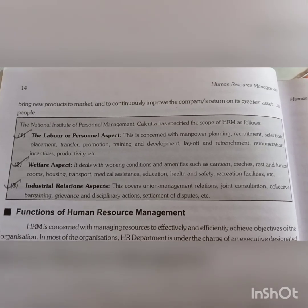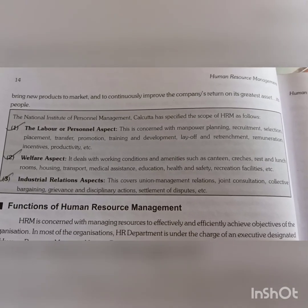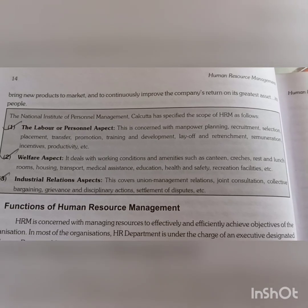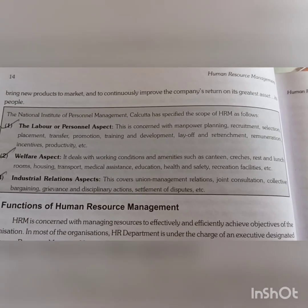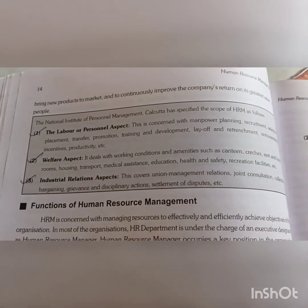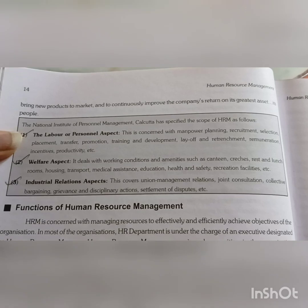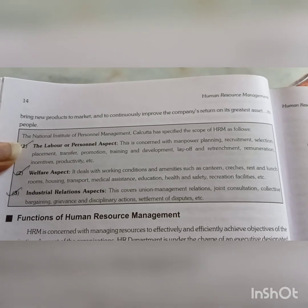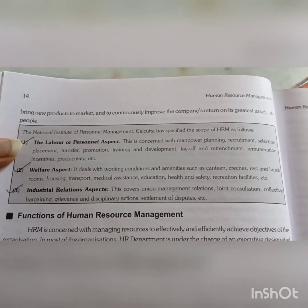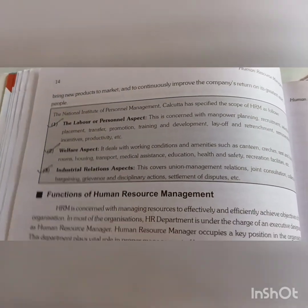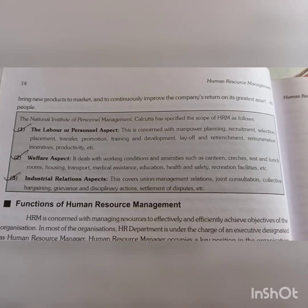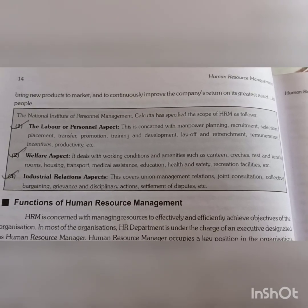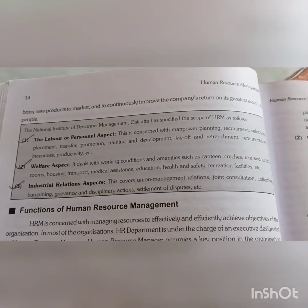There is also scope in personal management: Labor and personal aspects — manpower planning and recruitment. These include planning, recruitment, selection, placement, transfer, promotion, training, development, lay-off, retrenchment, management, incentive, and perquisite. Labor welfare deals with working conditions, maintenance, canteen, crèches, lunch rooms, housing, transport, medical assistance, and education facilities. Industrial relation aspects include union management, joint consultation, collective bargaining, grievances, and settlement of disputes.